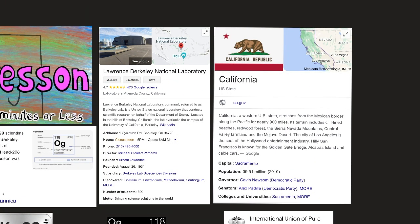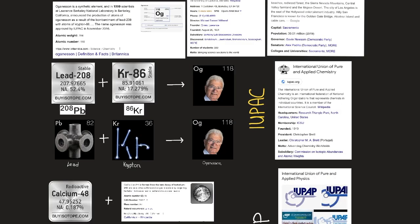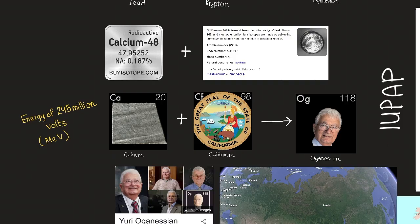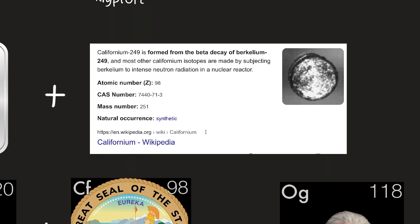In 2006, scientists at the Joint Institute for Nuclear Research at Dubna, Russia announced that Oganesson had been made in 2002 and 2005 in a cyclotron by the nuclear reaction of calcium-48 at an energy of 245 million electron volts with californium-249.